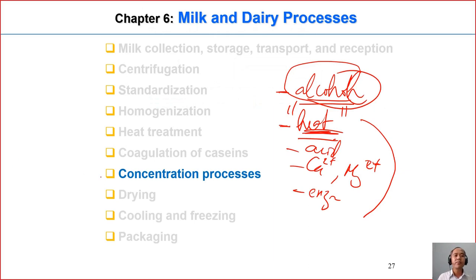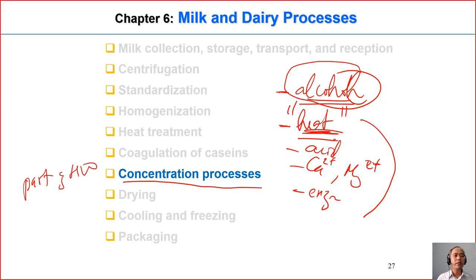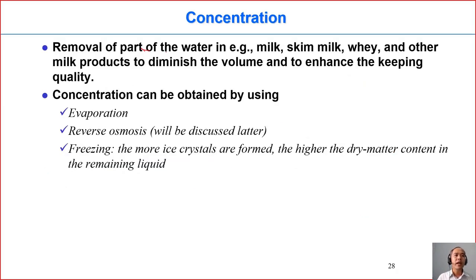Now we go to the next process, the concentration process. Concentration is a process where we apply heat to evaporate water so we can remove part of the water. When we remove part of the water, we reduce water activity. When we reduce water activity, we enhance the keeping quality of the product.